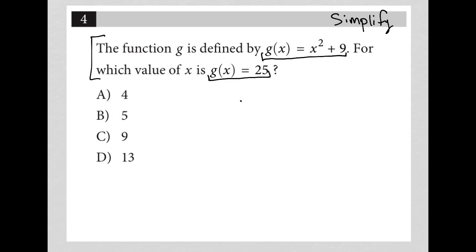So, I'm going to rewrite these functions. G of x is equal to x squared plus 9, and G of x is equal to 25.